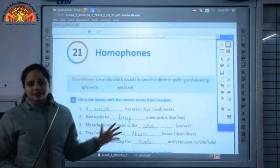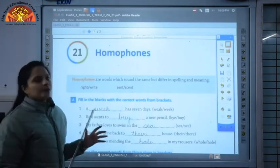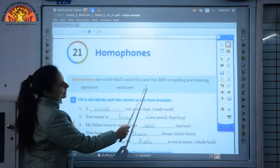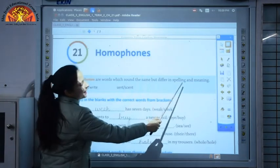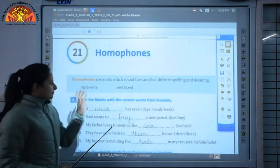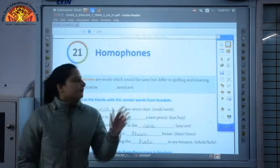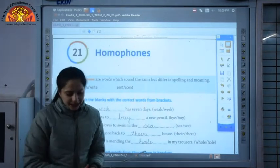First we look into the definition of homophones. What are homophones? Homophones are words which sound the same but differ in spelling and meaning. These are the words which have the same sound but their spelling and meaning is different.